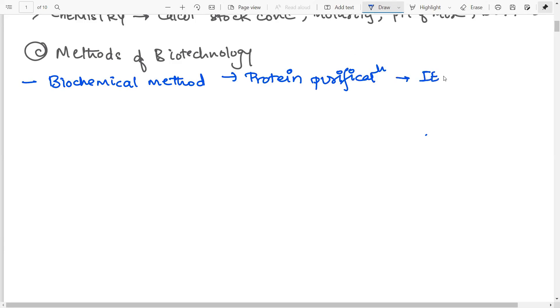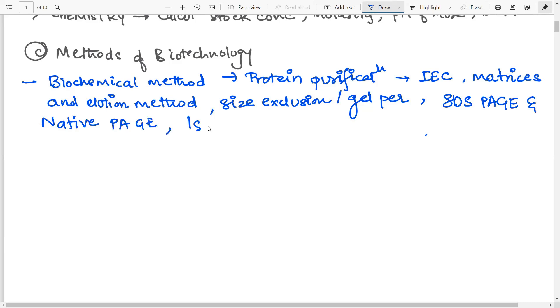So the different methods that need to be done are ion exchange chromatography. In ion exchange chromatography, you should be very well versed with the first of all separation. That is what kind of elution you will use and what matrices you will use. So what kind of matrices and the elution methods? Then next, after ion exchange chromatography, you need to know size permeation chromatography. So this is another method you have to understand. Then SDS page and native page. You have to understand the difference between the two, native and SDS page.